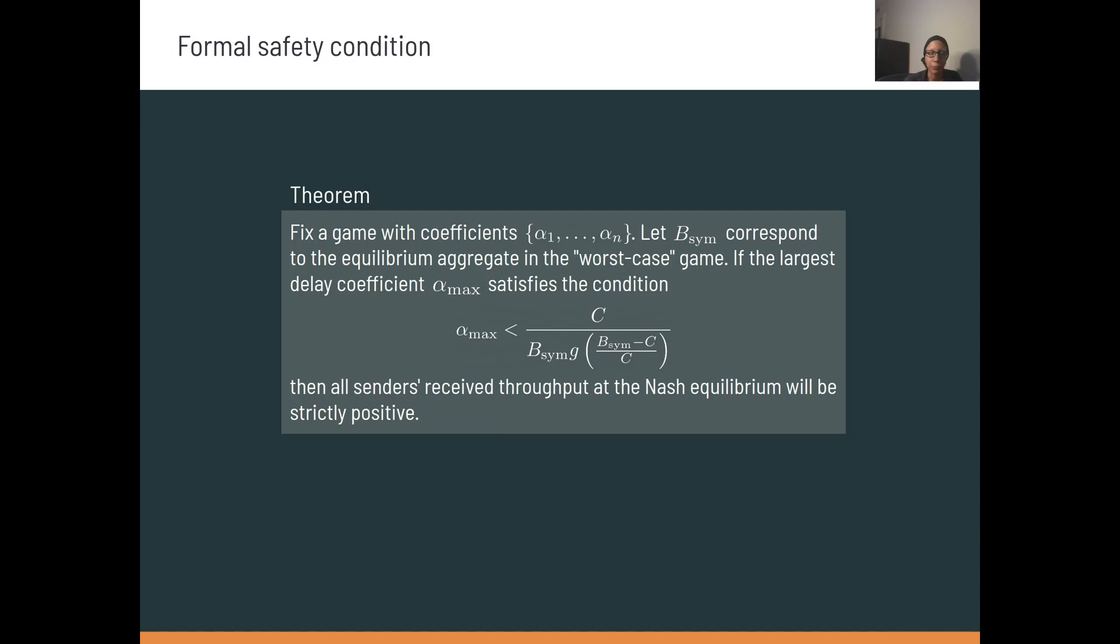I'll briefly cover the formal safety condition that we prove in our paper. Here, bsim is the worst case aggregate that I discussed in the previous slide. Given this worst case aggregate, we can give an upper bound on the highest delay sensitivity a player can have such that its equilibrium preference will be positive. That is, if all players' alpha values fall between alpha min, which is fixed, and alpha max, which is given by our bound, then the equilibrium throughput should be positive for everyone. This result is for a game with n players, but we can show that it also holds for any number of players greater than n.